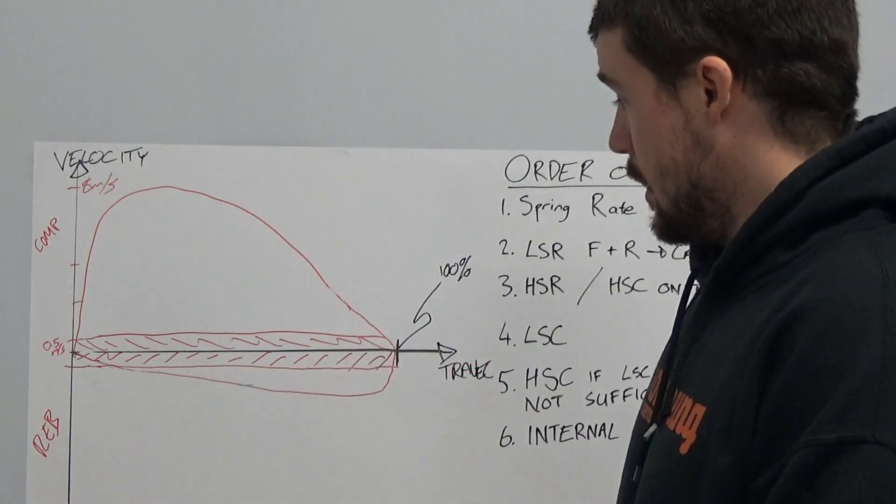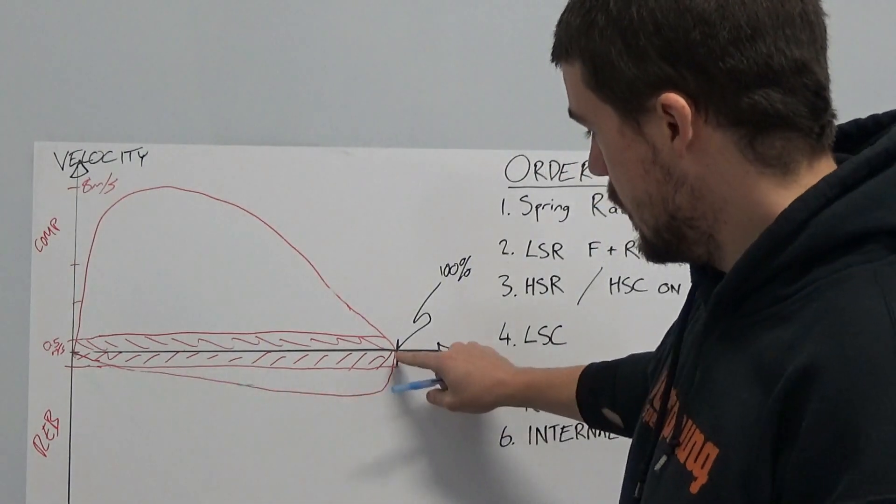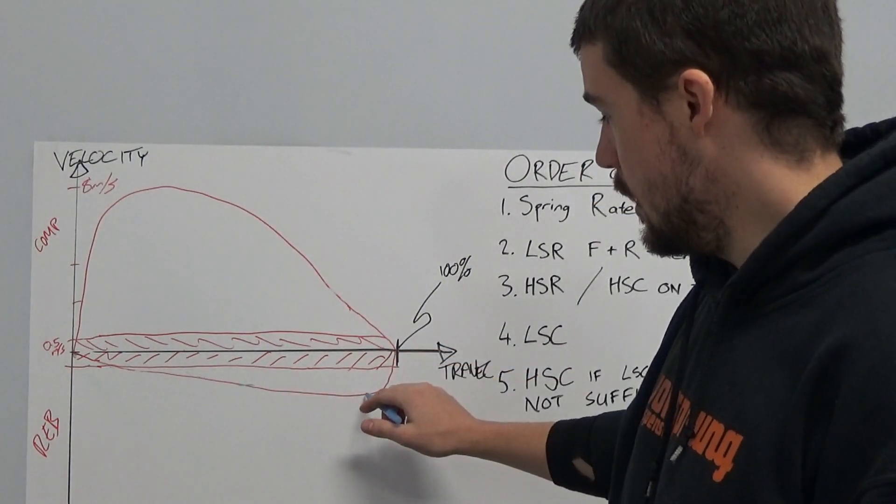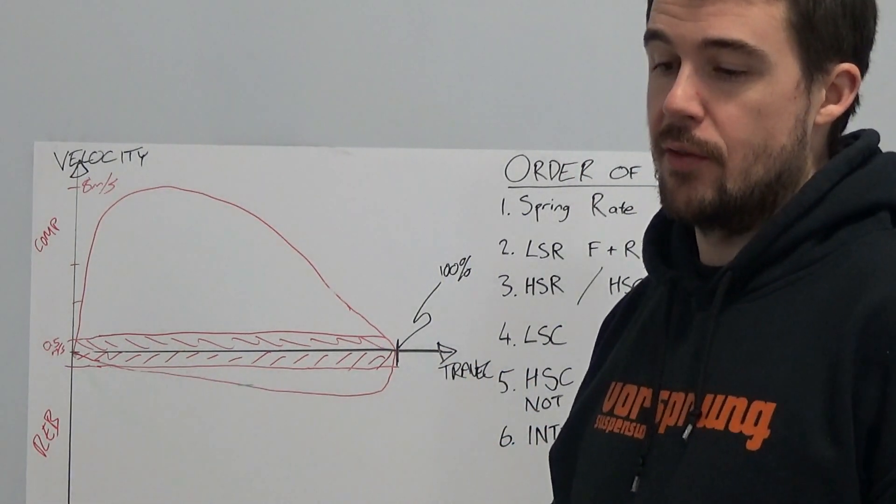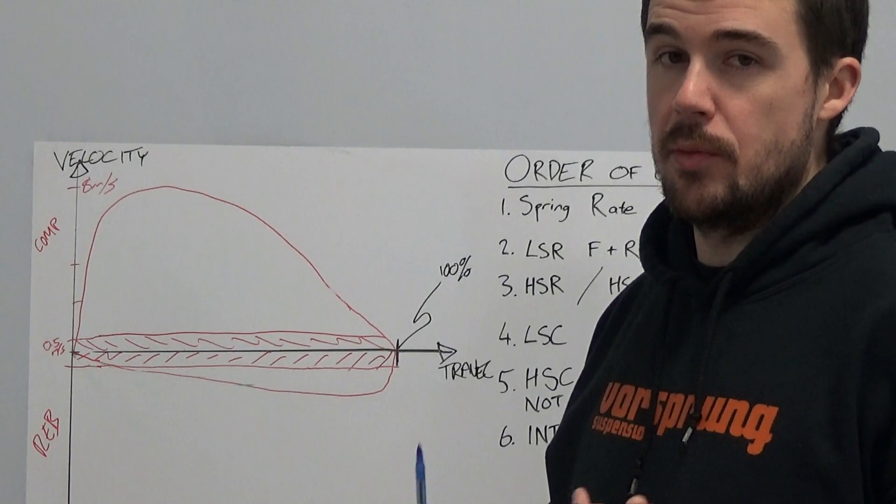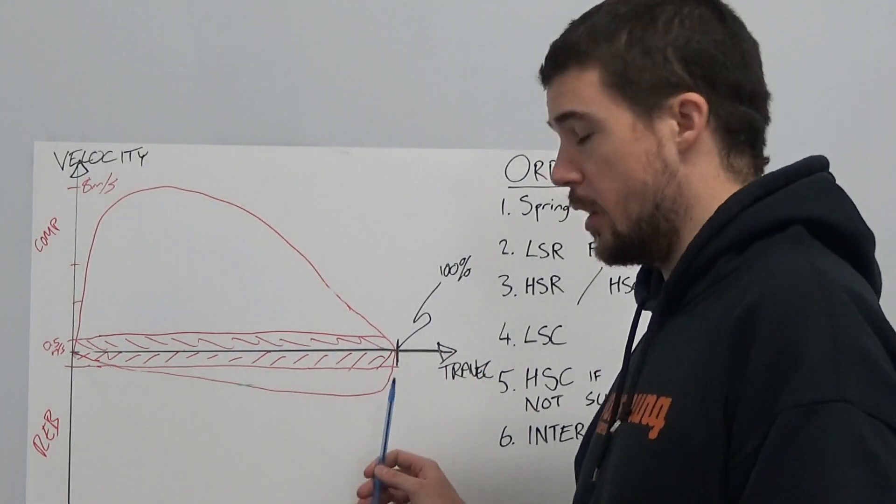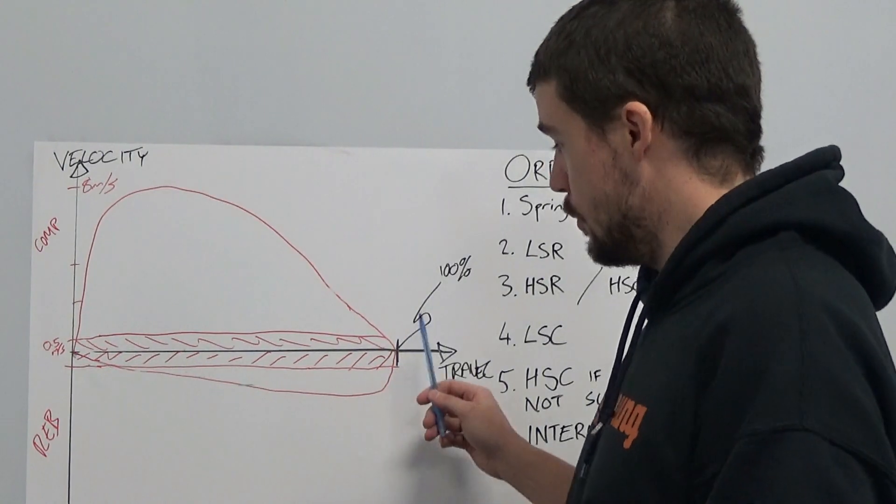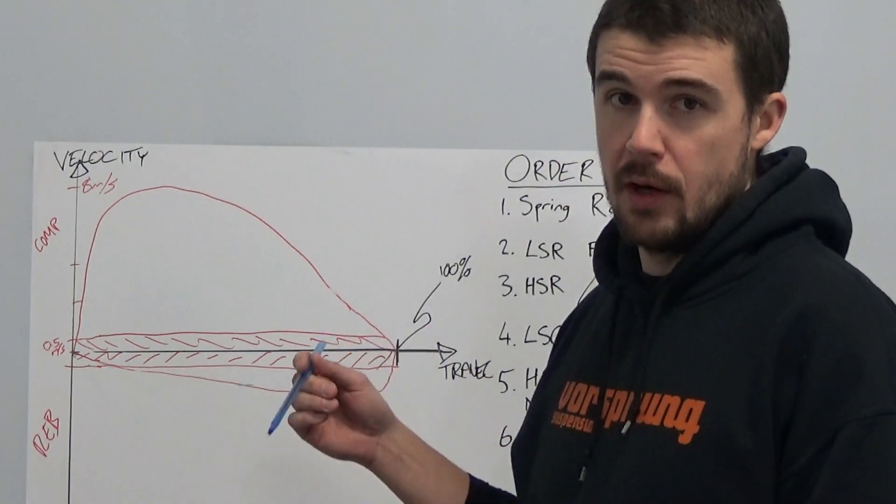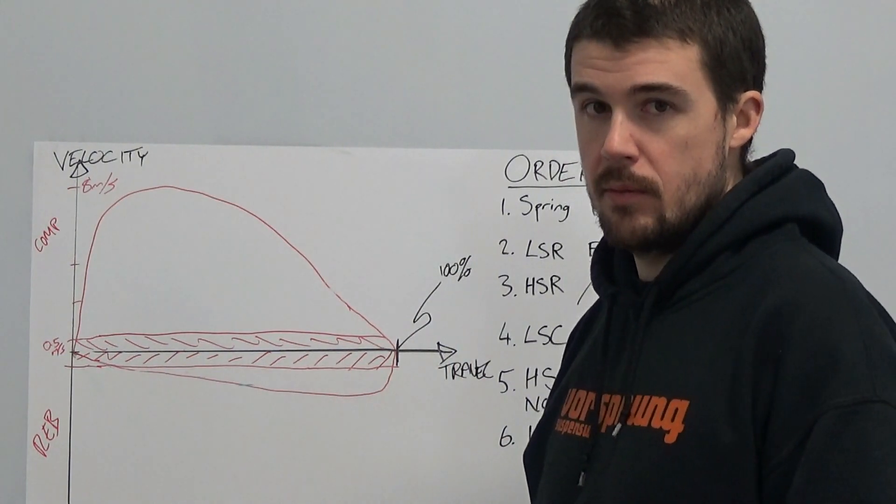So notably, in rebound, what we see here with this outline is essentially that the highest velocities we're seeing are very close to bottom out. So the furthest into the travel, and the reason for that is that the spring is really what dictates the maximum amount of force that we have available to accelerate the wheel. So where we have the highest forces available to accelerate the wheel and to overcome the rebound damping, obviously that is where the spring forces are.